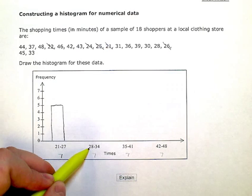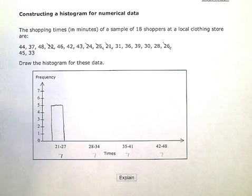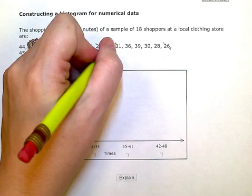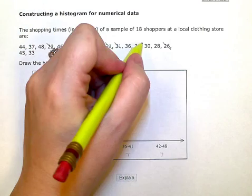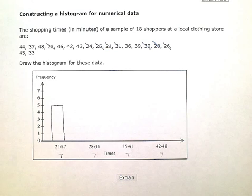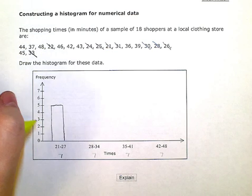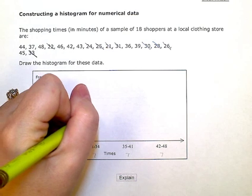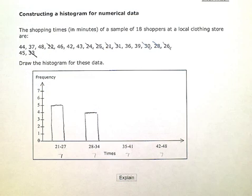Now, 28 to 34, so 28 to 34 I have one, two, three, four data points that fall in that range. So I'm going to do a bar that's four units high.